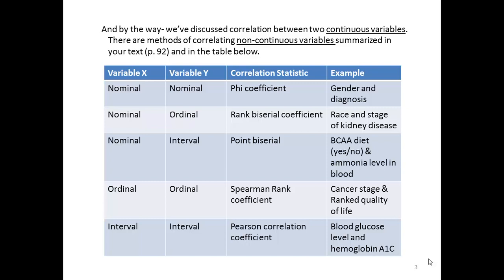Let's just go back to our branched-chain amino acid diet example. We could ask the question, instead of how much branched-chain amino acid or what percent was in the diet, we could say, was the patient on the diet or not on the diet? So yes, no would be nominal level. And then ammonia levels can take any point along the number line, so it would be interval level.